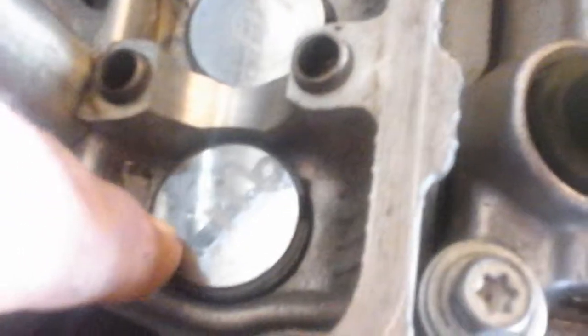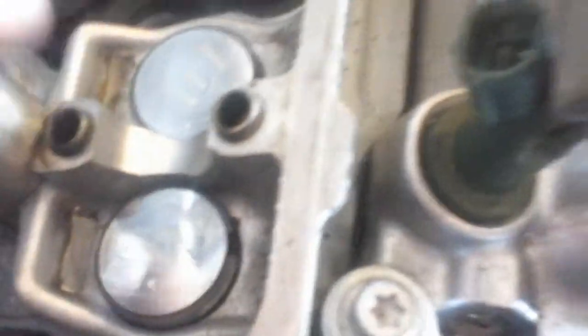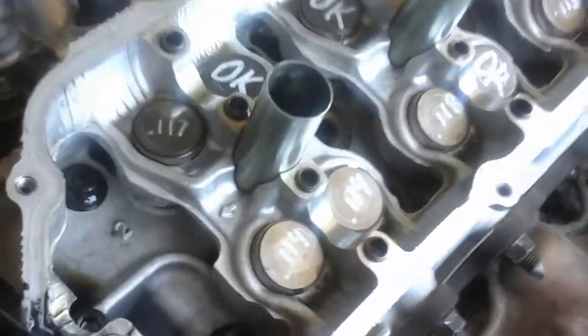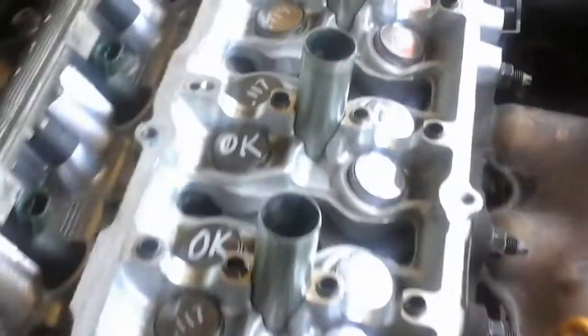If you look at this one, this little round piece on top comes out of this thing called a bucket. The bucket holds the top of that shim in its place. Each shim is a different thickness.